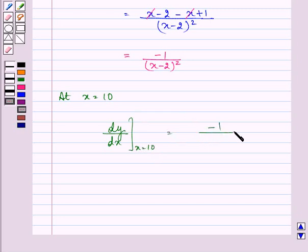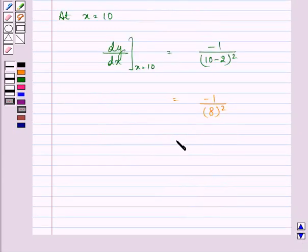We have minus 1 upon 10 minus 2 the whole square. Solving it we have minus 1 upon 8 the whole square which is further equal to minus 1 upon 64.